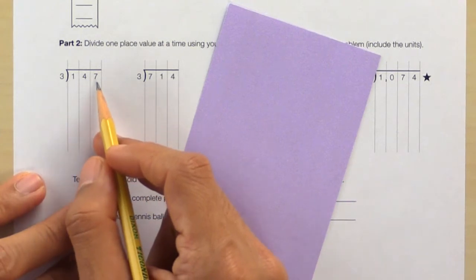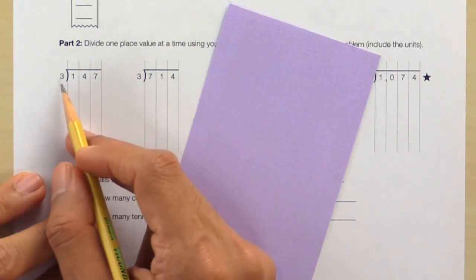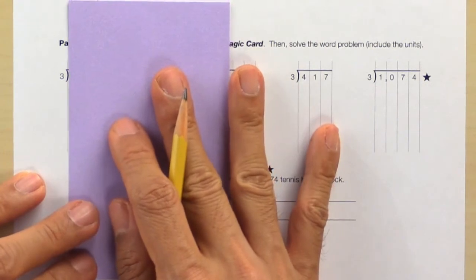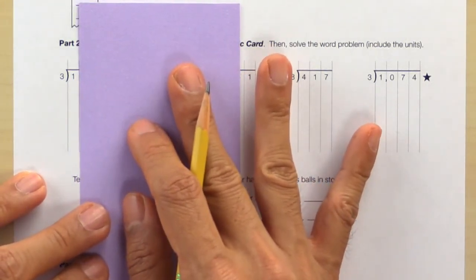Lesson 7, multi-digit quotients dividing by 3. Let's go over one example in part 2. Here we have 147 divided by 3. So let's use our magic card and cover up the dividend, slide over one column, and we have...